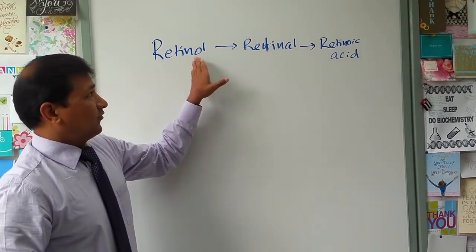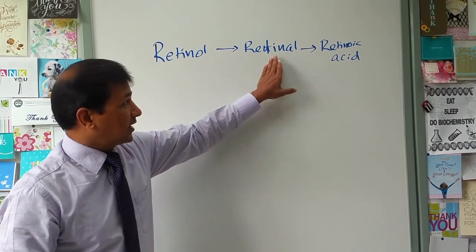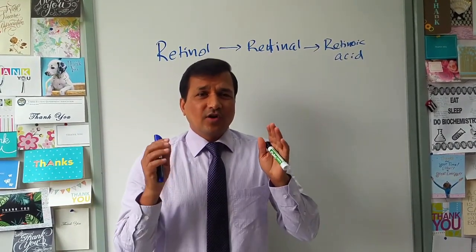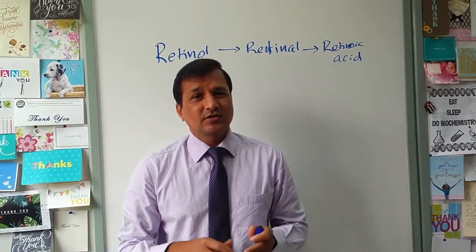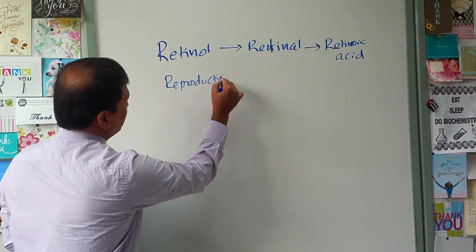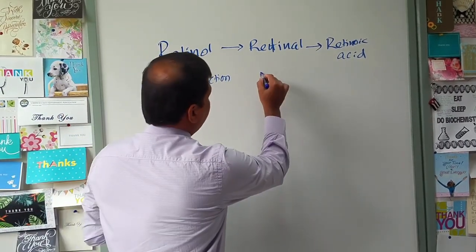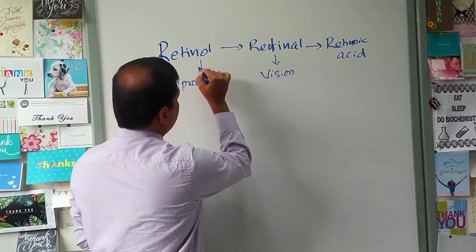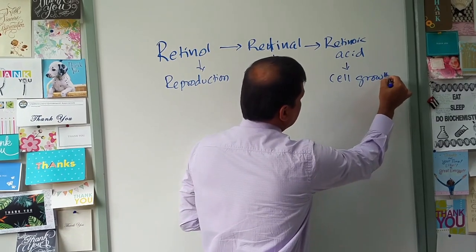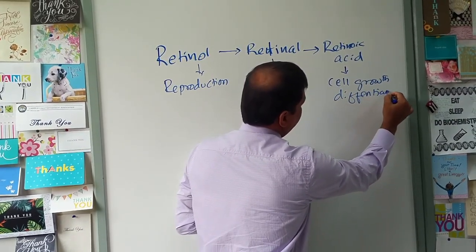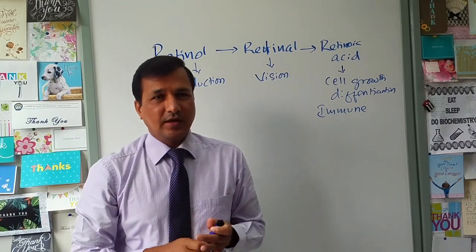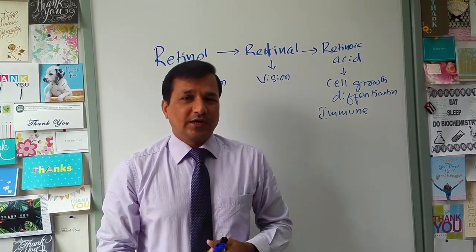It depends on which cell receives vitamin A. Reproductive organs like the ovary and spermatozoa need the alcohol form, retinol, for reproduction. For vision, we need the aldehyde form, retinaldehyde. For cell growth, differentiation, and immune mechanisms, we need retinoic acid.